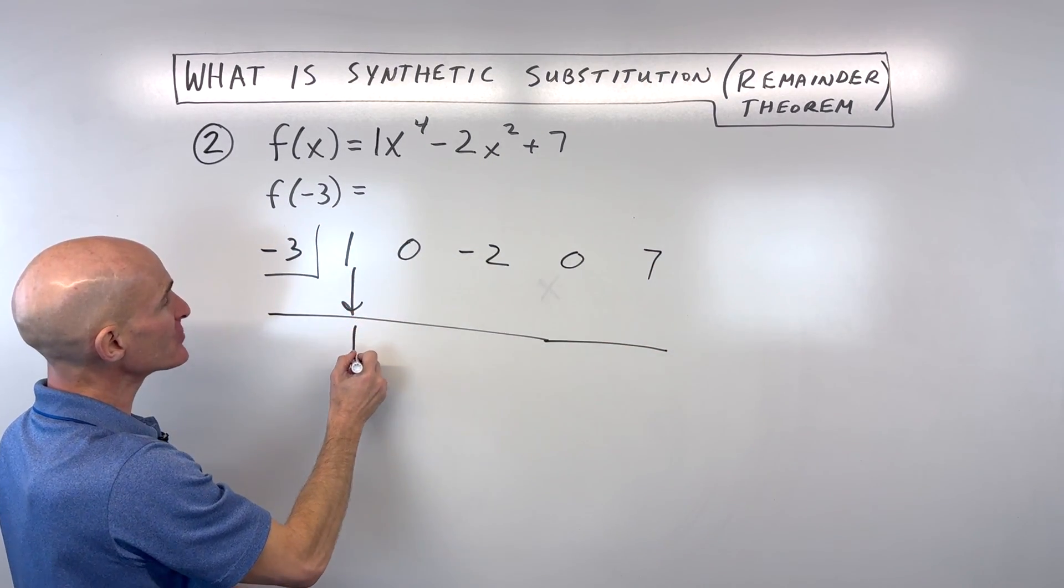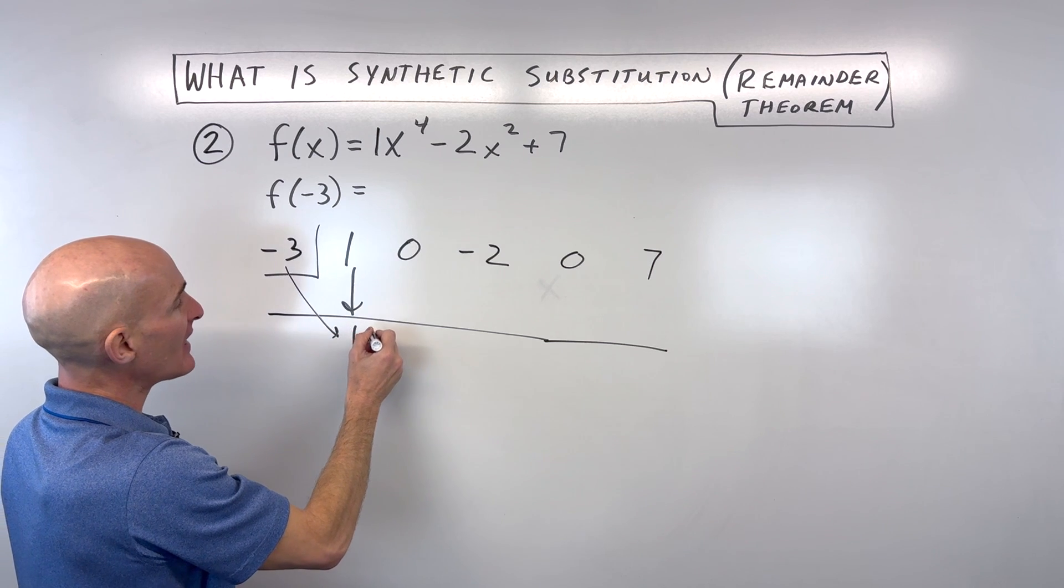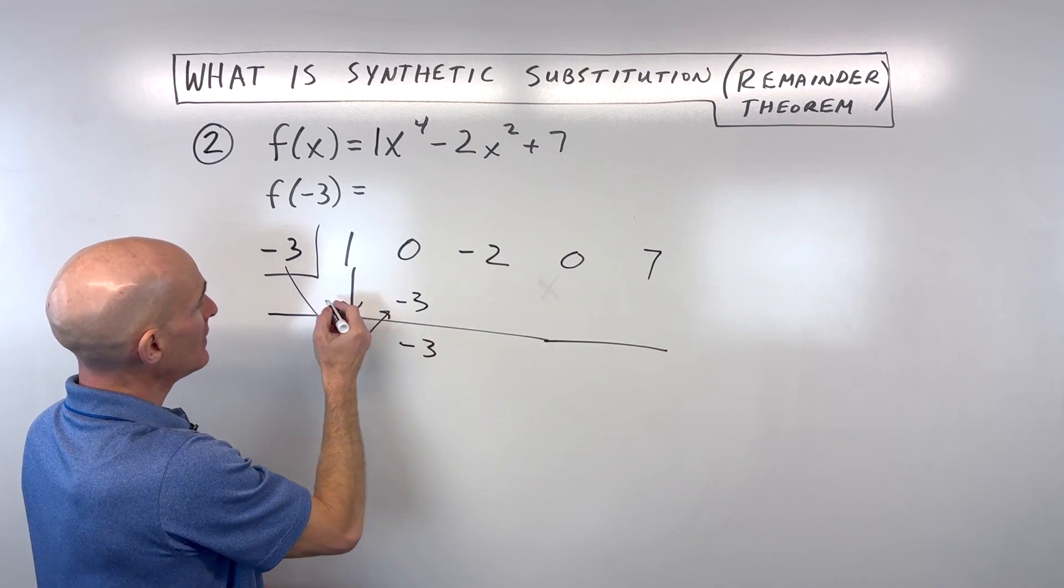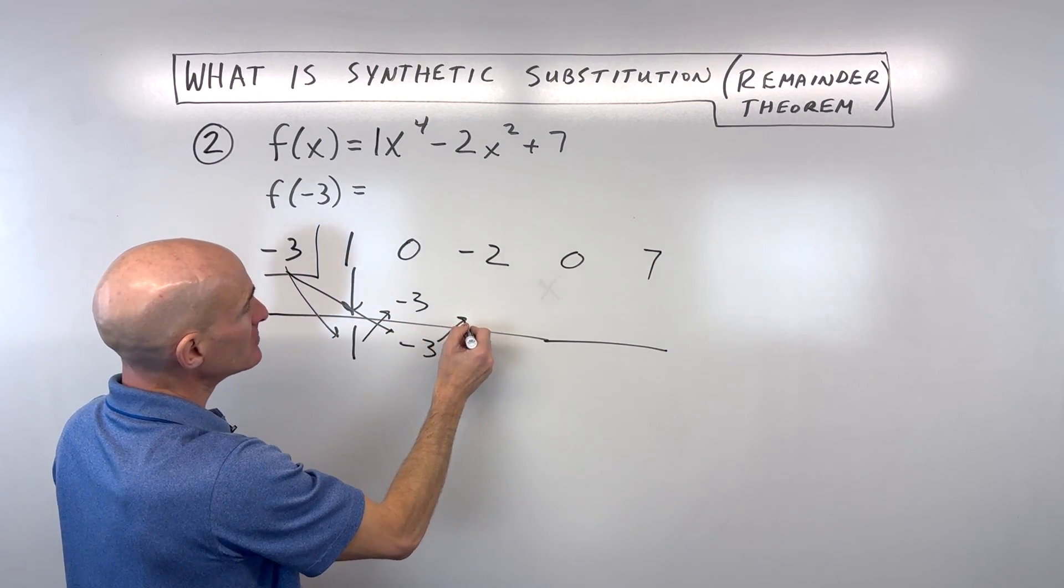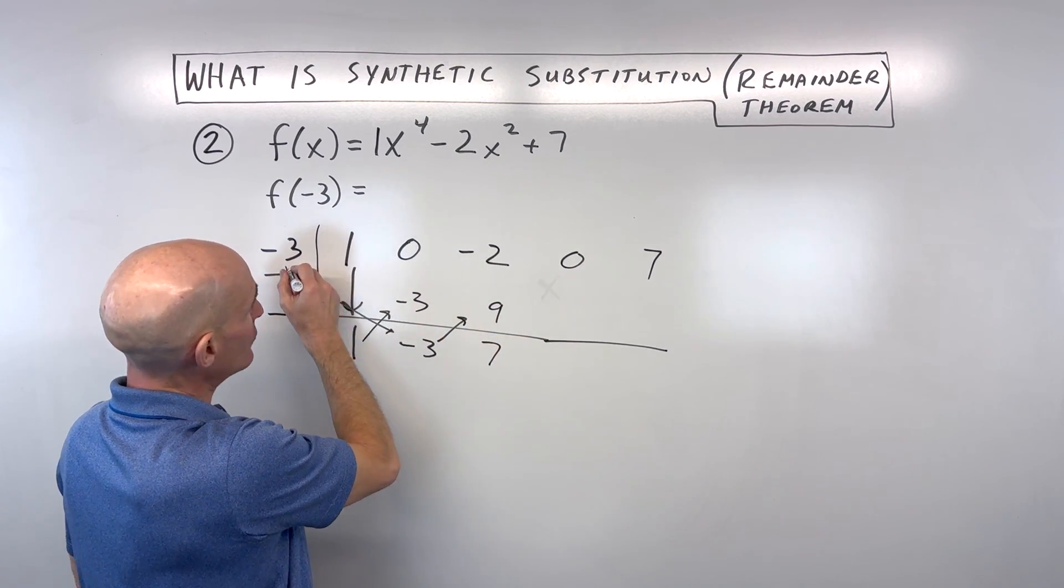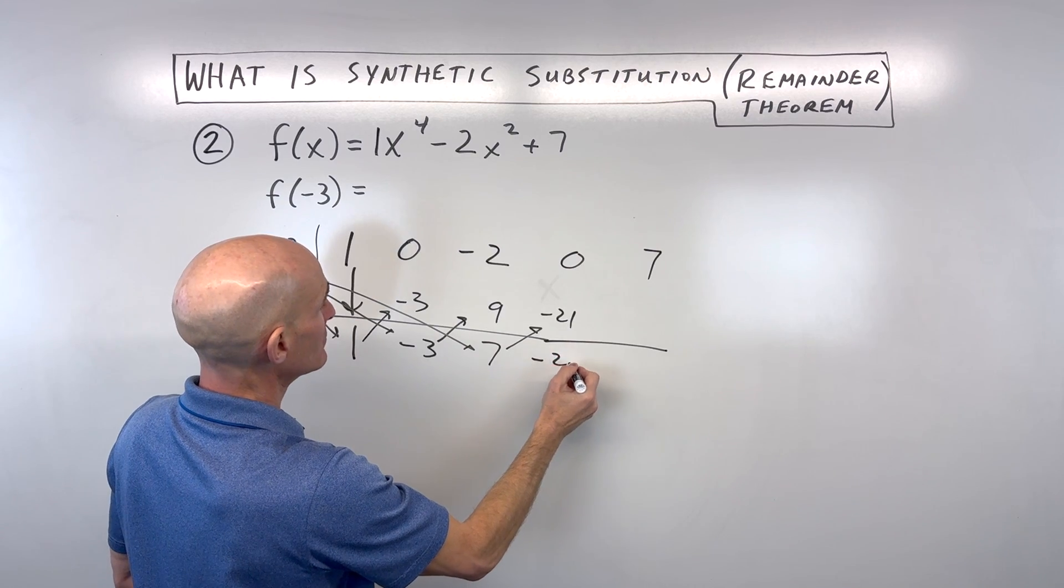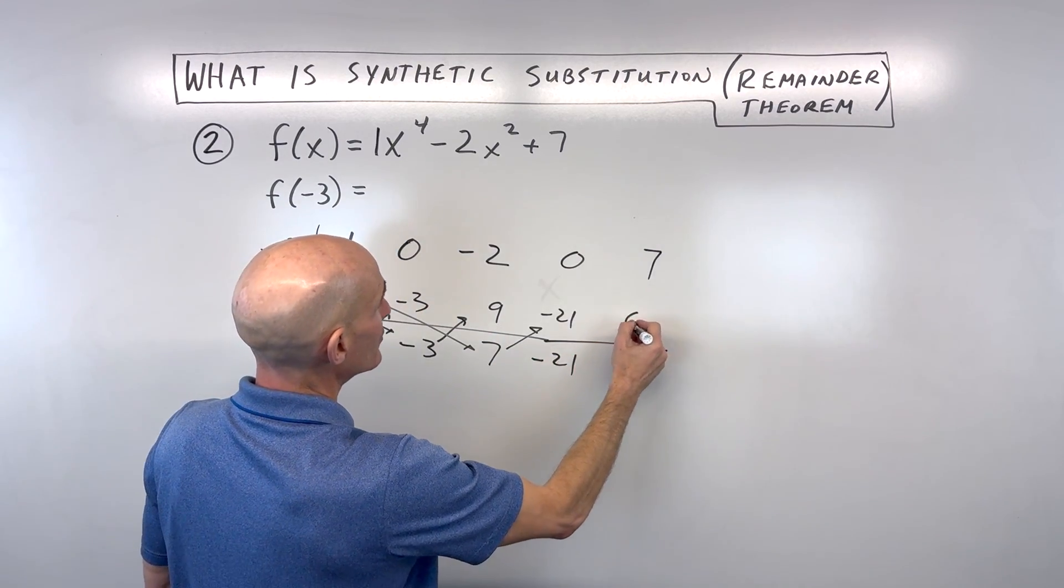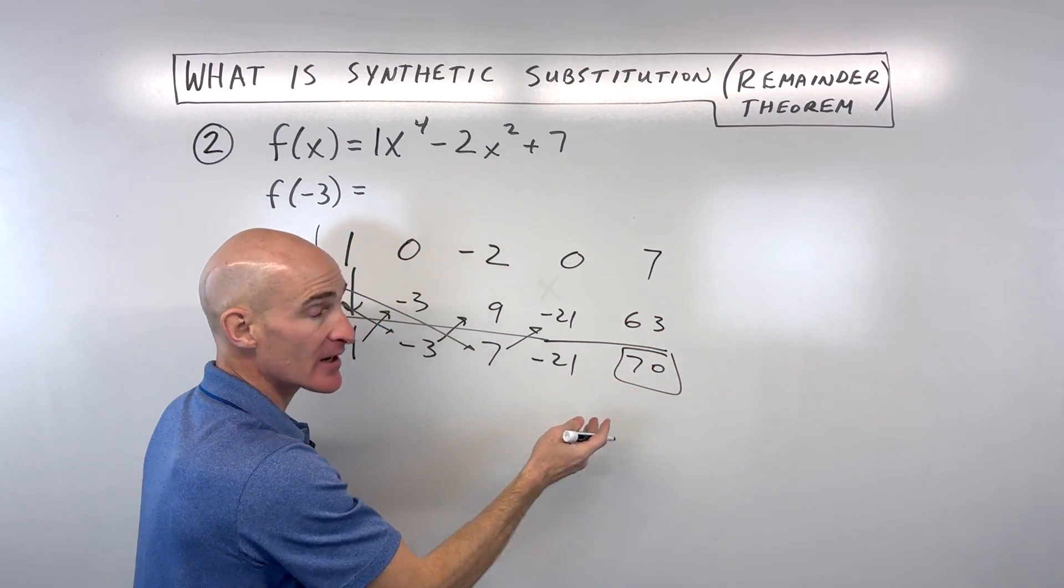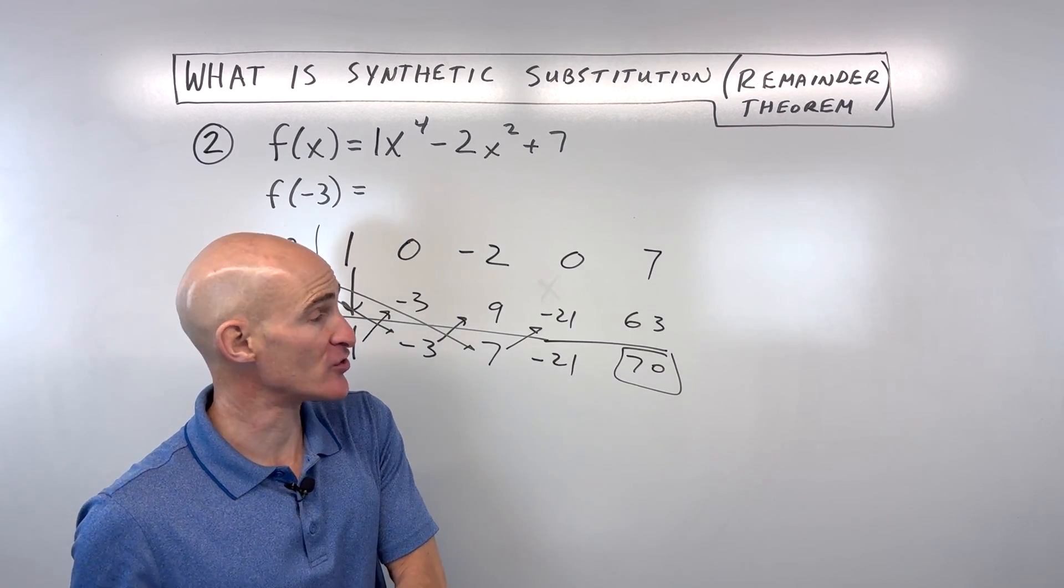We drop down that first number. We multiply in the diagonal. We add straight down. We multiply in the diagonal. We add straight down. We multiply in the diagonal. We add straight down. We multiply in the diagonal. And we add straight down. And this last number, this is like our remainder when we were doing synthetic division, remember?